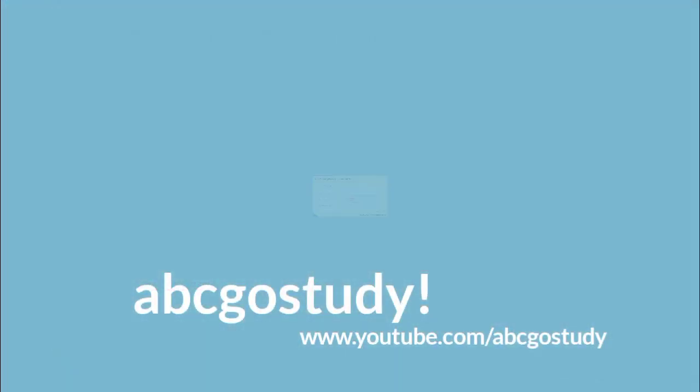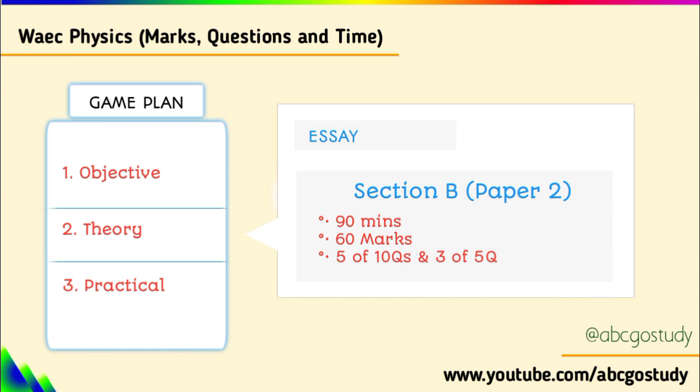For the theory part, you have 90 minutes, and you'll be given part 1 and part 2. In part 1, they'll give you 10 questions and you'll have to pick 5 out of those questions, and this would amount to 15 marks — that's 3 marks per question. For part 2, you have 3 of 5 questions, so you have to pick 3 out of 5 questions, and each of those questions will be 15 marks, for a total of 45 marks in part 2.